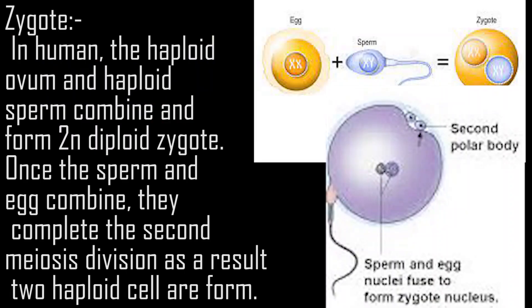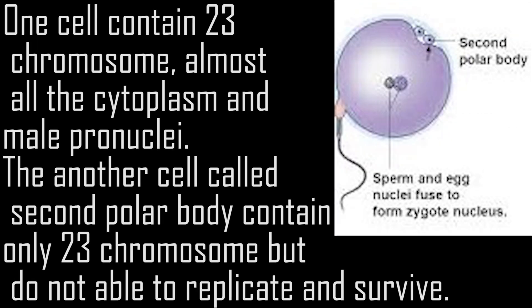Zygote and Early Cleavages. In humans, the haploid ovum and haploid sperm combine to form a diploid zygote. Once the sperm and egg combine, they complete the second meiotic division, resulting in two haploid cells. One cell contains 23 chromosomes, almost all the cytoplasm, and the male pronuclei. The other cell, called the second polar body, contains only 23 chromosomes but cannot replicate and survive.